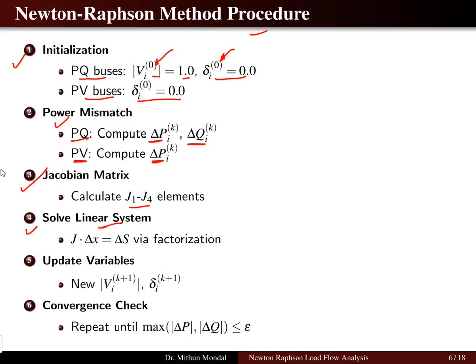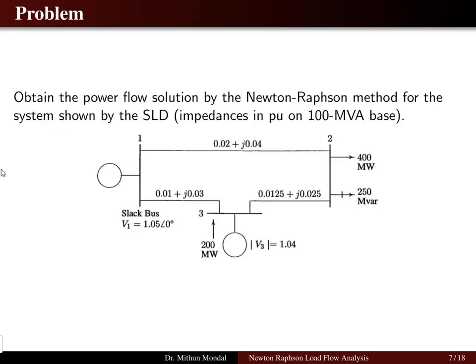Then solve the linear system of equations. The non-linear system is converted to linear form using elements J1 to J4 and variable delta-x and delta-s via factorization. Update the voltage and phase angle each iteration and check convergence — whether the real and reactive power mismatch is less than the threshold limit set by the problem.